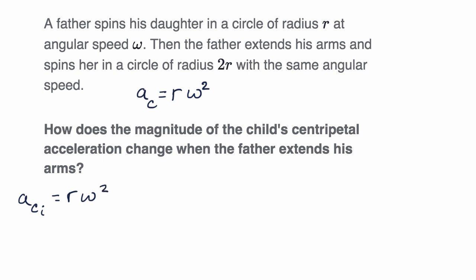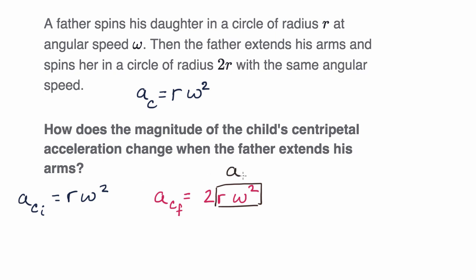When the father extends his arms, the magnitude of the final centripetal acceleration — now our radius is 2r and the angular speed is still omega — is going to be 2r omega squared. This part, r omega squared, is just the magnitude of our initial centripetal acceleration. So the magnitude of our centripetal acceleration has increased by a factor of 2.